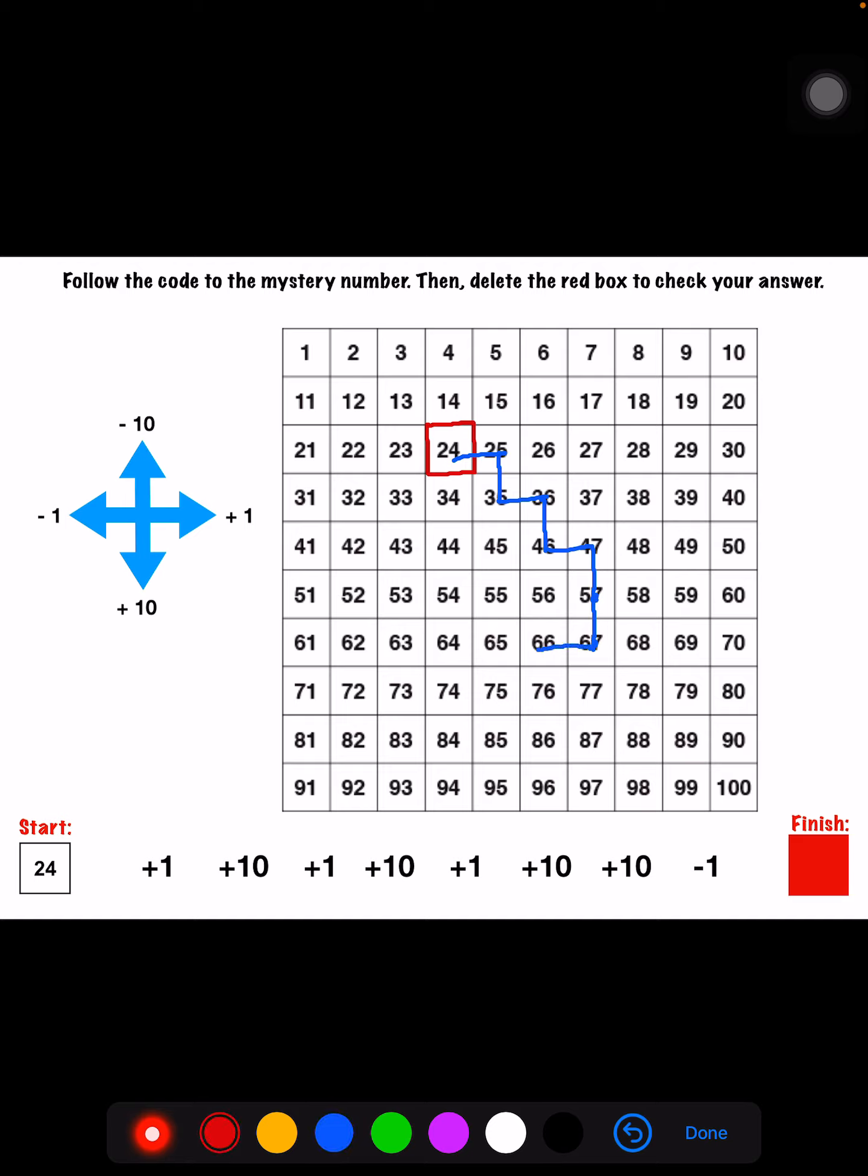That is the last part of the code, which means I start at 24 and I end at 66. So I'm going to write 66 in my finish box for my code.